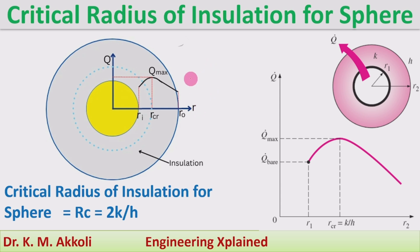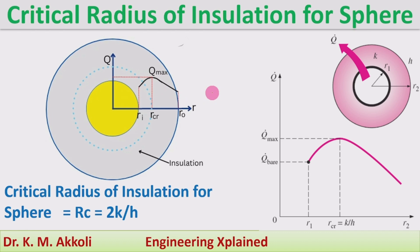Here we are going to consider the hollow sphere in the form of a hollow sphere with an insulation layer. For that insulation layer, initially, even though we add the insulation layer, the rate of heat transfer will go on increasing in the case of small wires, small tubes, and cables. After the critical radius of insulation, the rate of heat transfer will decrease. The critical thickness of insulation is the thickness or radius at which it gives the maximum heat transfer.